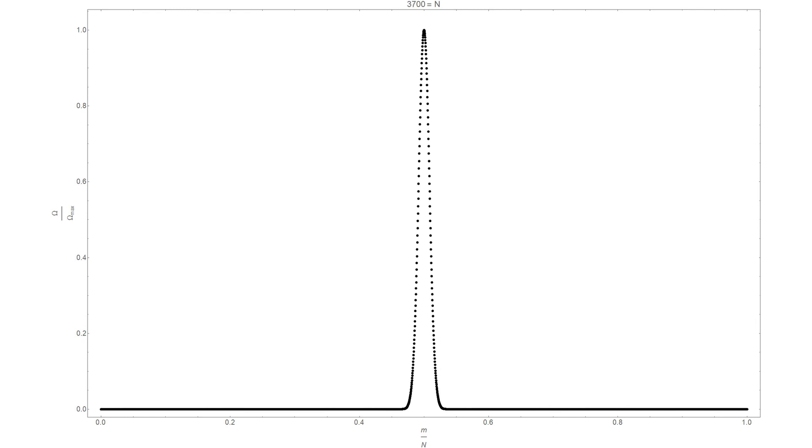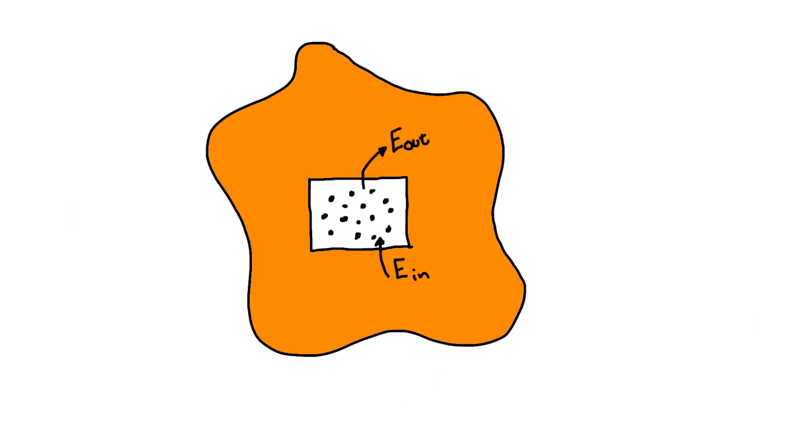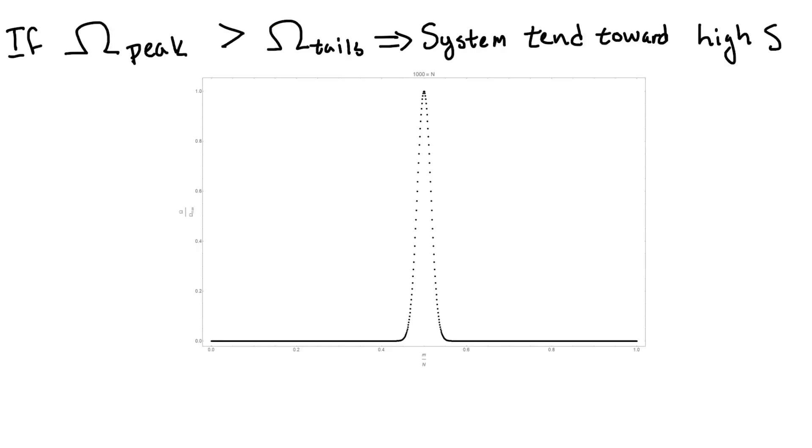But how do we see that the second law comes out of this? Well, since we're assuming that our system will randomly give or take energy from the heat bath, that means that every state is just as probable as every other state. So, if we see that there are more states corresponding to high entropies than low entropies, then that means that the entropy will tend to be maximized.